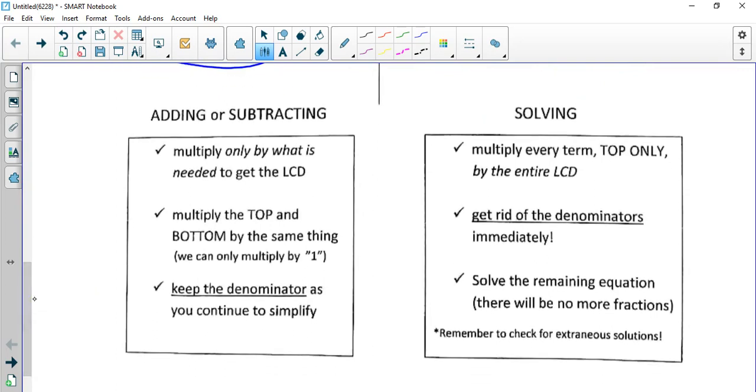When you're adding or subtracting, you multiply only by what is needed to get the LCD. You multiply the top and bottom. That's extremely important. And you keep the denominator as you continue to simplify, or you can save it until the very end. For solving, you multiply every term, but this is very important: top only for the LCD. Then we cancel. We get rid of the denominators.